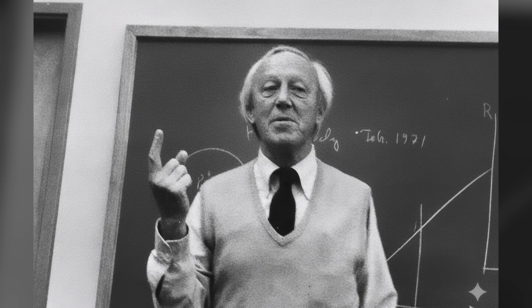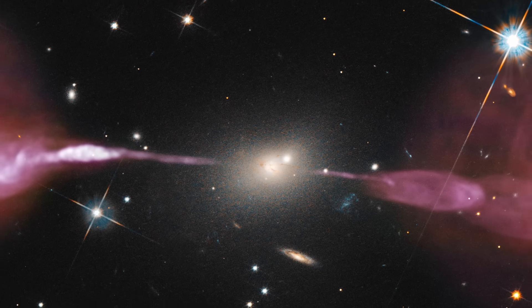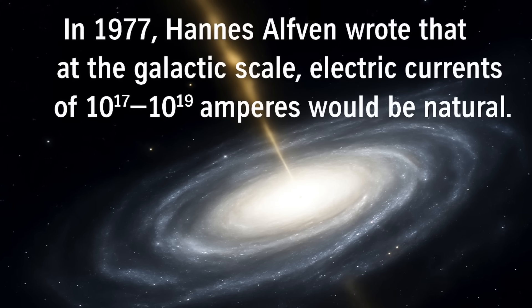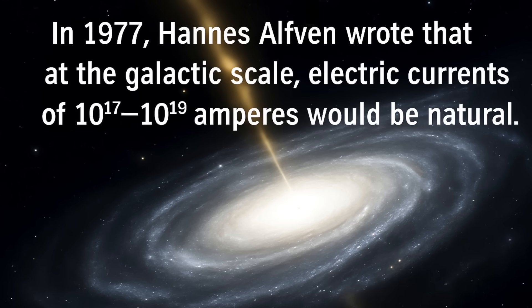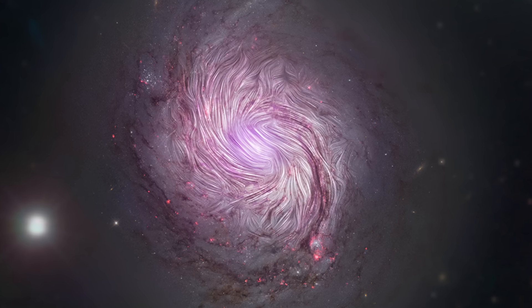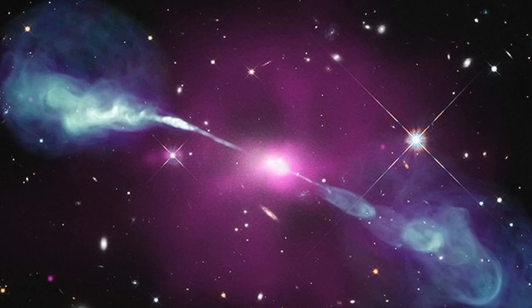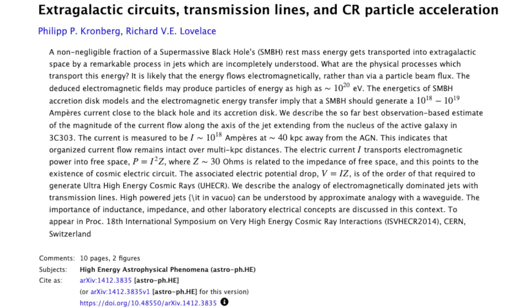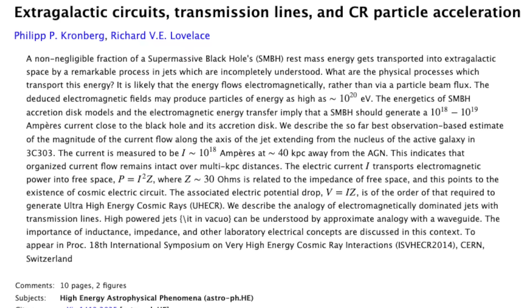We're going to start with Hannes Alfvén, who in 1977, he and his students proposed that if we could ever measure electric currents at the galactic scale — like these gigantic active galactic nuclei — we should expect to see electric currents between 10 to the 17th and 10 to the 19th amps. That prediction sat out there for about 40 years. Then recently, with fine enough resolution for polarization measurements, we can look at enormous jets coming out of active galactic nuclei, deduce the electric current involved, and lo and behold, it's 10 to the 18th amps in several galaxies — right in the middle of what Alfvén and his students predicted.